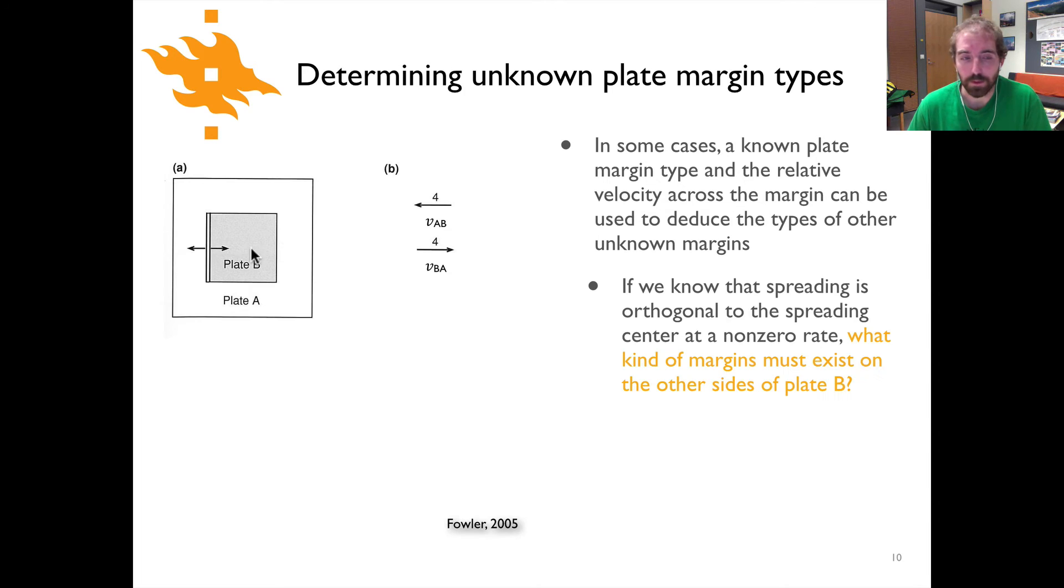We can deduce a little bit about this picture simply from knowing one of the plate boundaries. If we know the spreading is perpendicular to the boundary and has a non-zero rate, then we can say something about the other three boundaries. I'm going to give you an opportunity to pause the video and I'd like you to think about what kind of plate boundary must we have on the top and bottom of plate B as well as on the right side of plate B. Go ahead and pause the video and unpause it when you think you've got an answer.